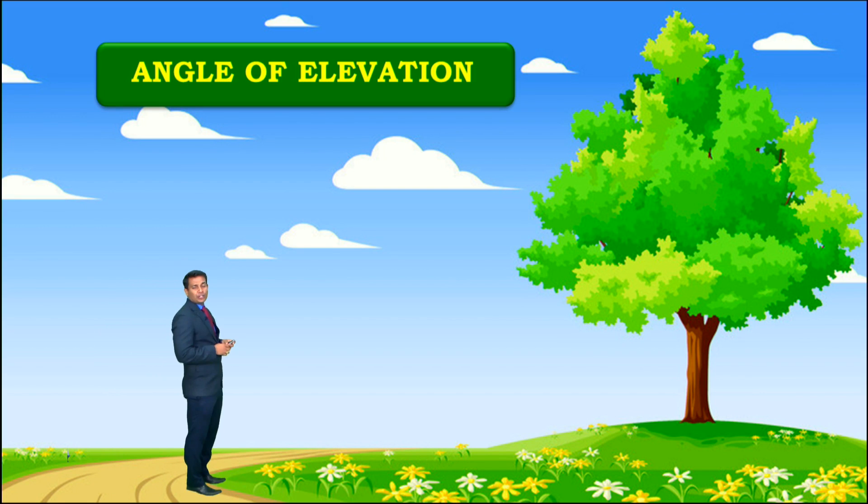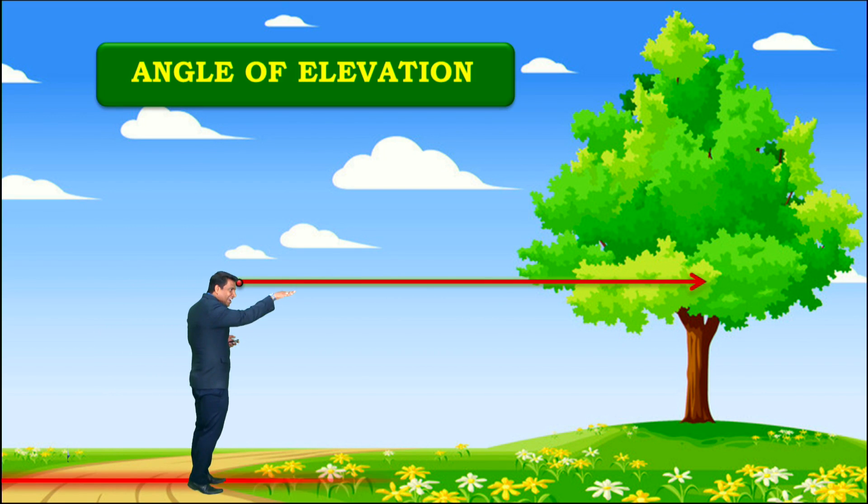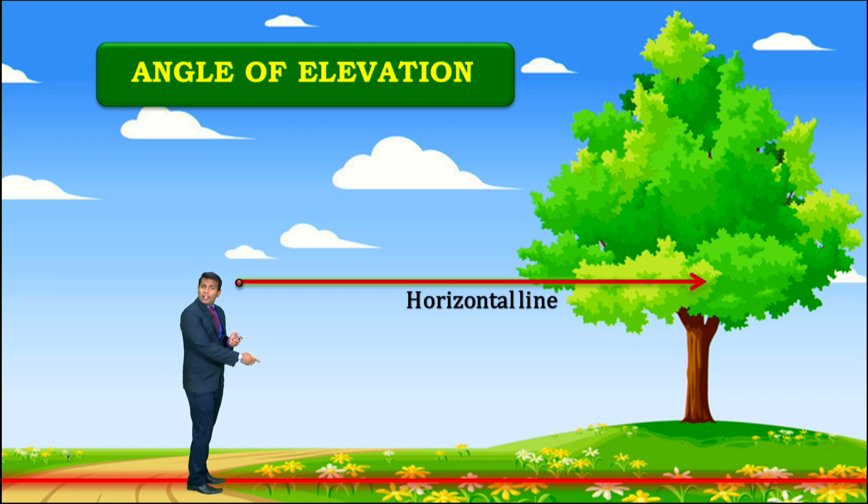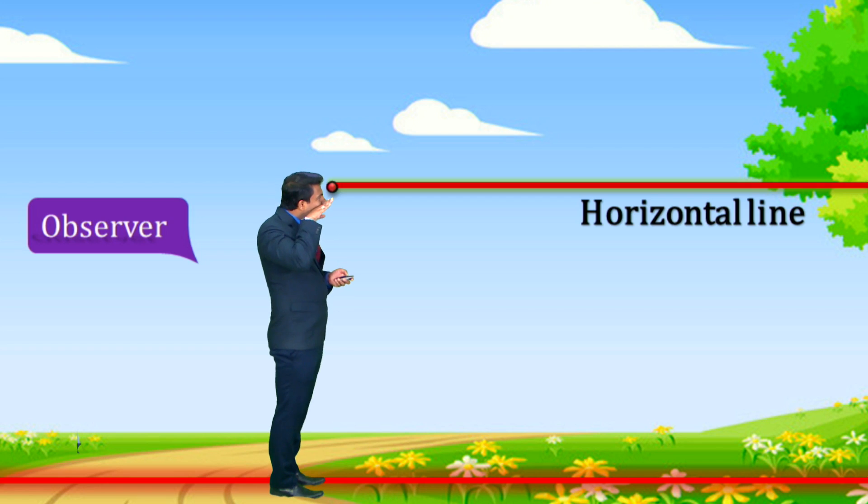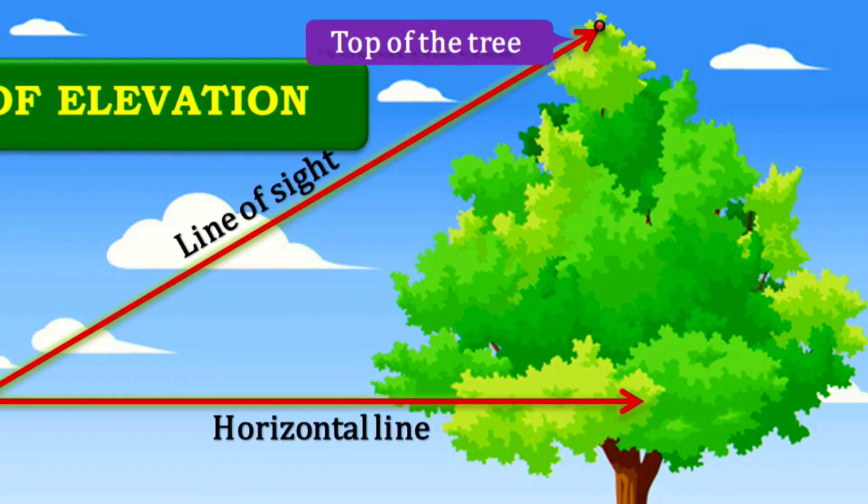'I have a line which passes through my eye, and this line is parallel to the ground. This line is called the horizontal line, so I'm going to observe that top of the tree.' This short video was a fantastic experience.